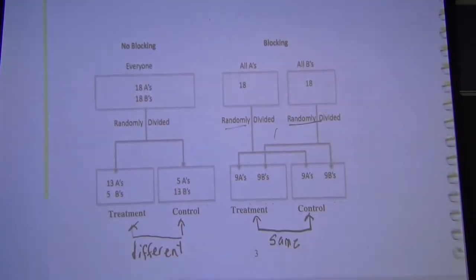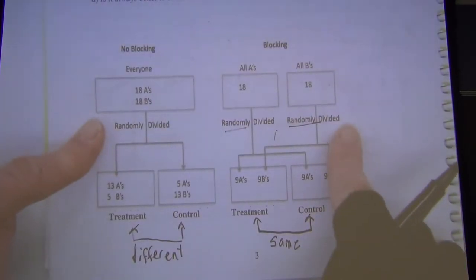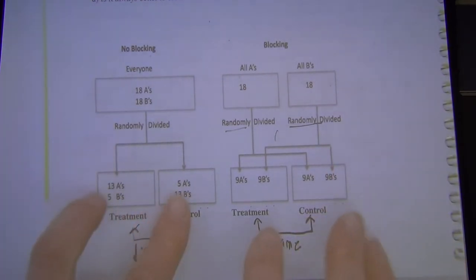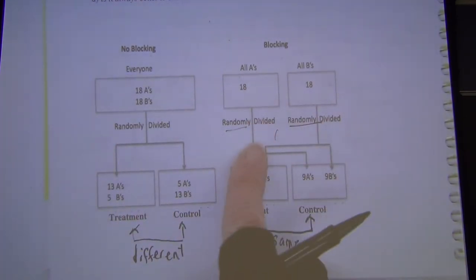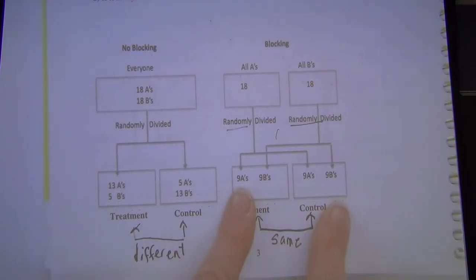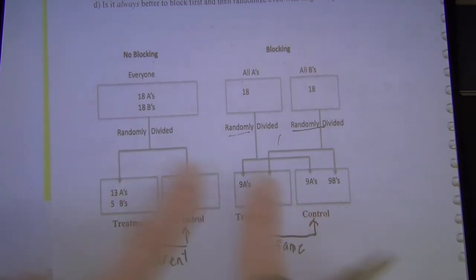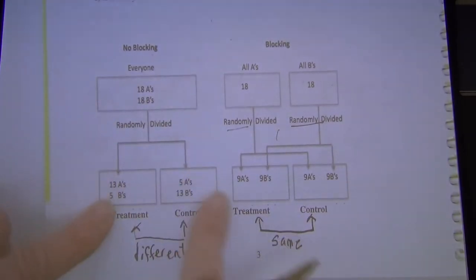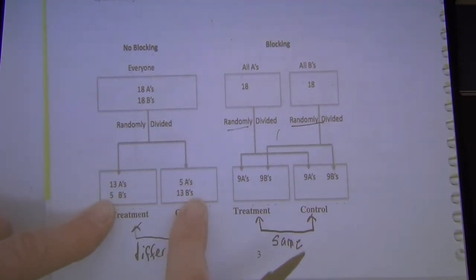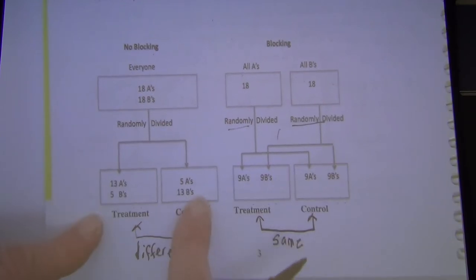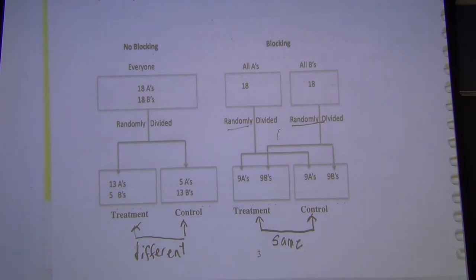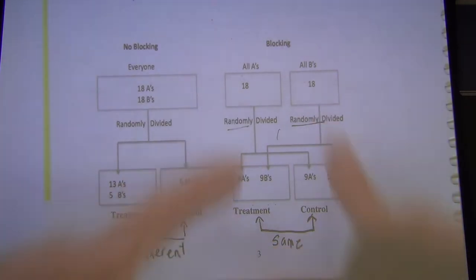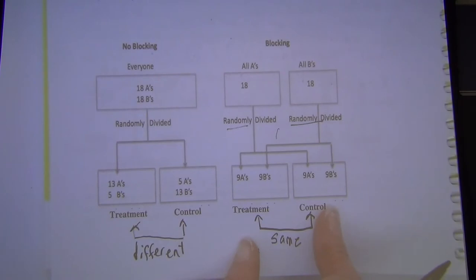People think blocking introduces bias, but it doesn't — you've just made sure the groups are more alike. Bias would only enter if you didn't randomly divide them. Without blocking in small samples, accidental differences can be very bad.